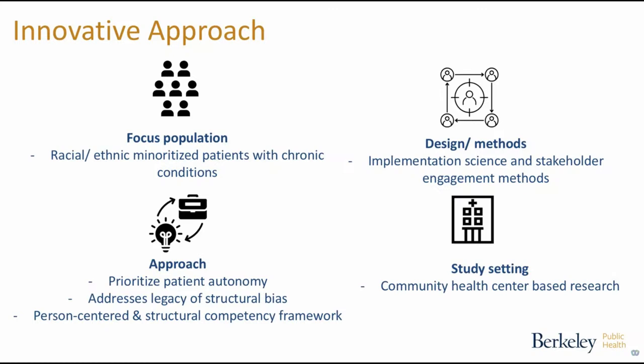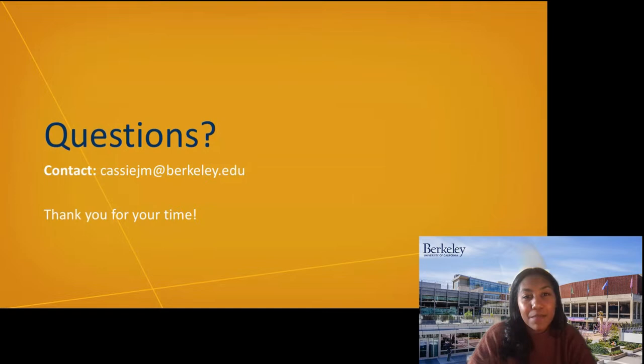The project has three aims. Aim 1 is formative qualitative work to understand reproductive decision-making processes and care preferences in Black and Latina people of reproductive age with type 2 diabetes and hypertension, using person-centeredness and structural competency as a framework. Aim 2 is adapting the decision support tool with user testing and cognitive interviews. Aim 3 focuses on implementation — assessing acceptability and feasibility and evaluating the implementation context in a community health center, specifically a federally qualified health center, which is an important part of our primary care safety net, has a high prevalence of these conditions, but has often been excluded from research.